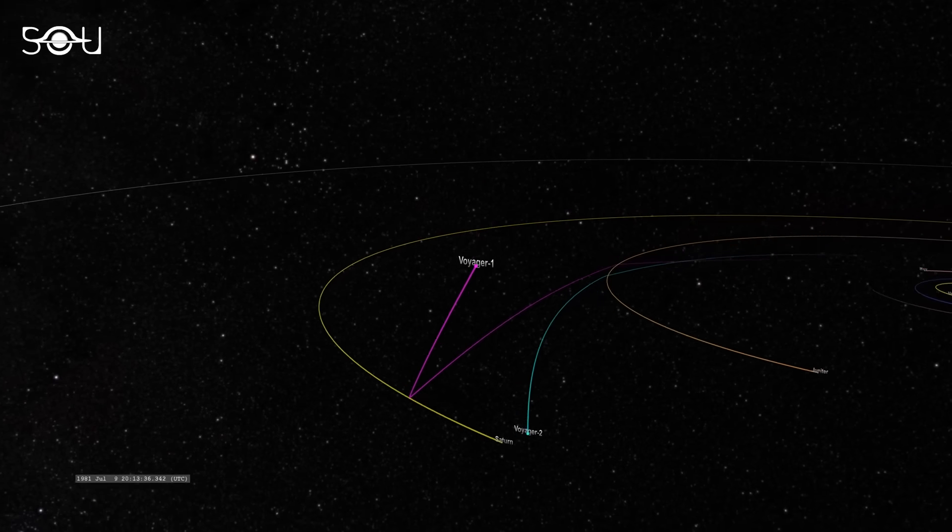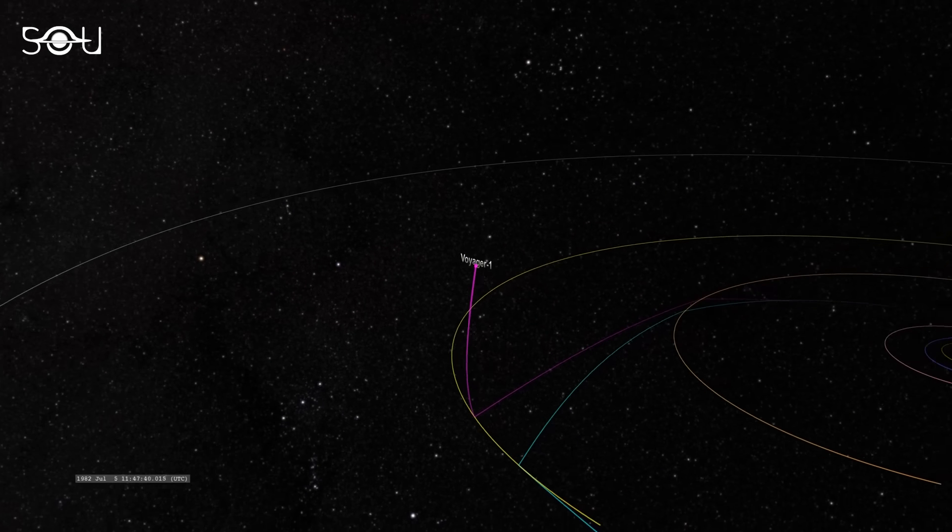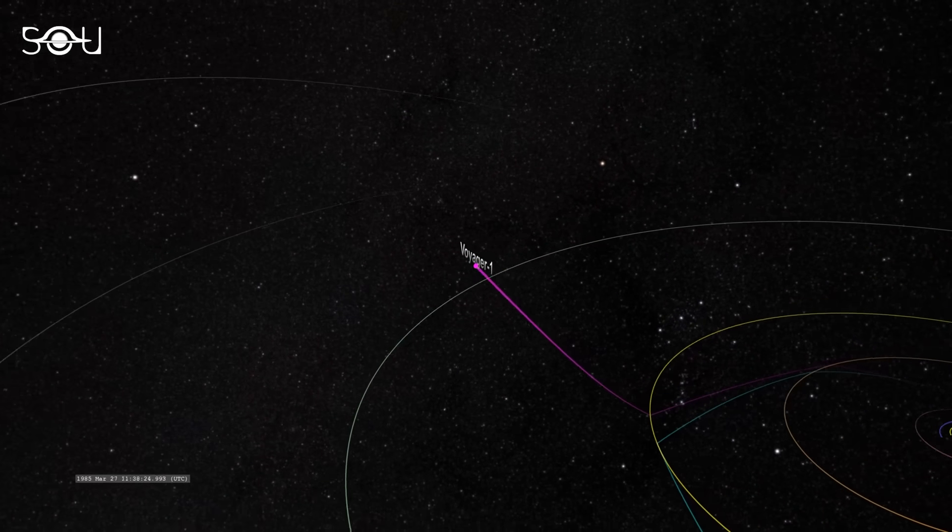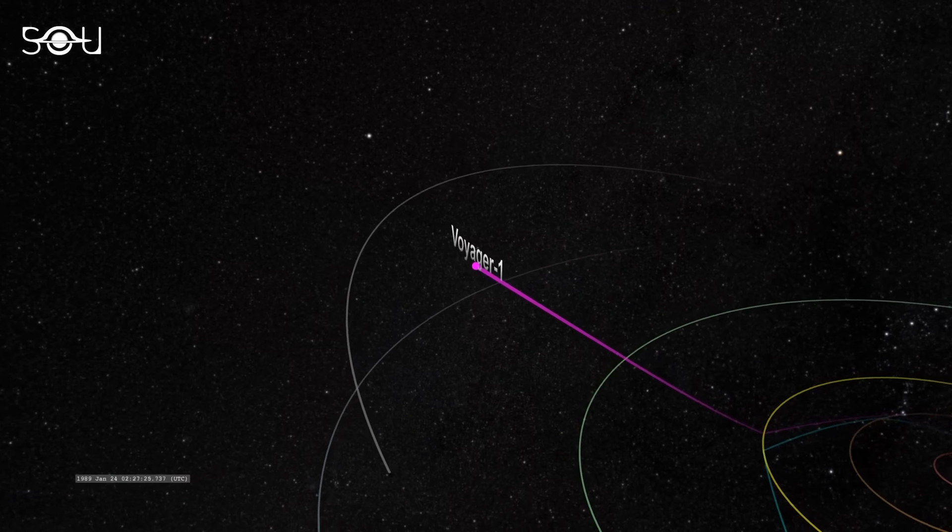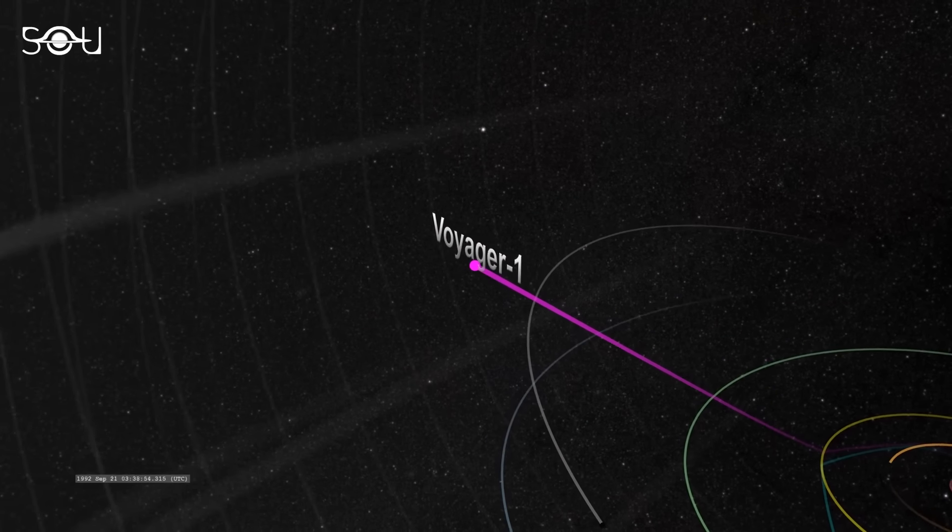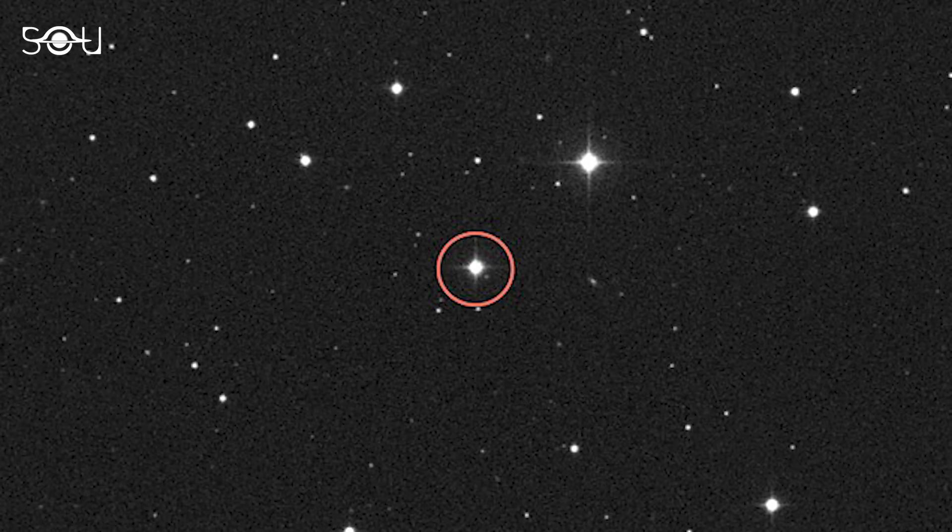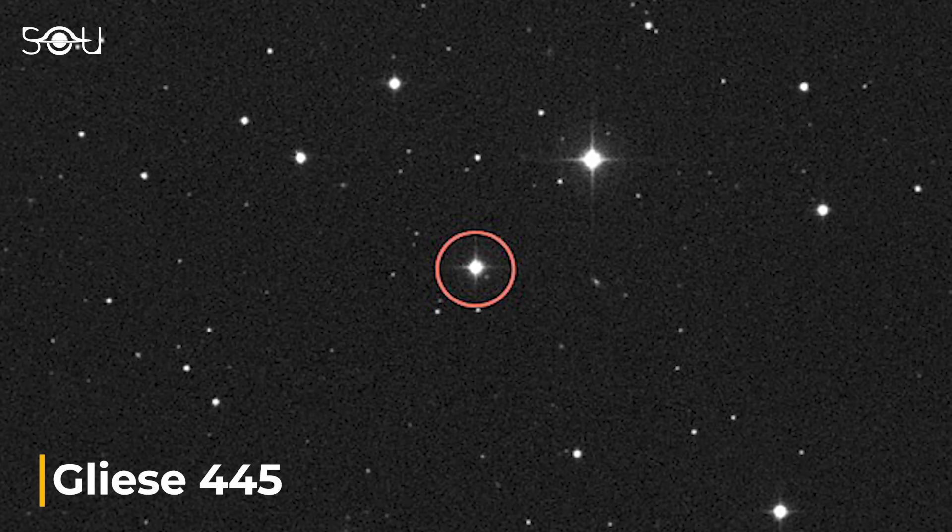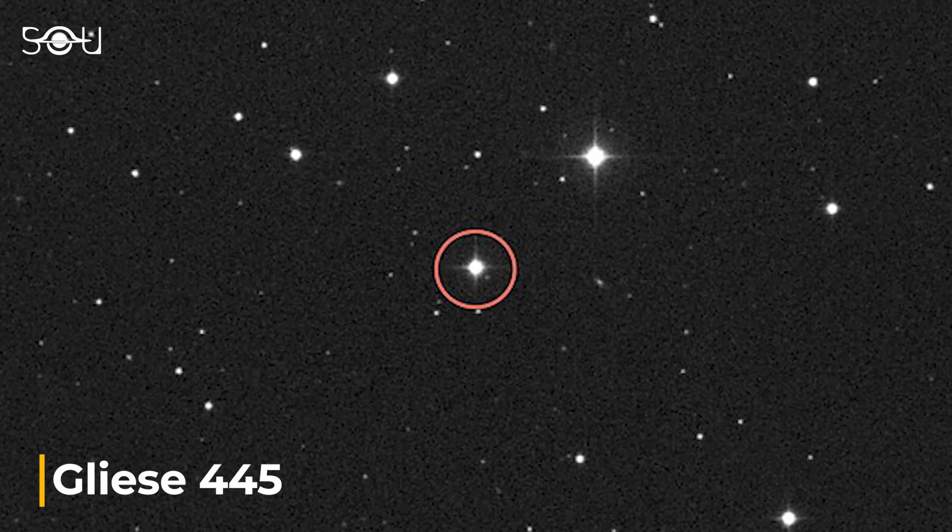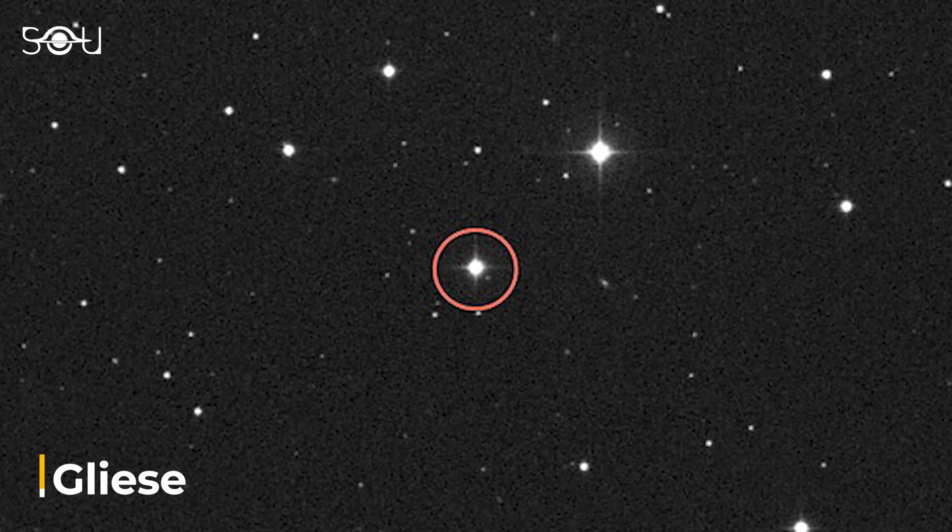Despite these challenges, Voyager 1's journey continues. It's not headed towards any particular star or planet, but in about 40,000 years, it will pass relatively close to a star named Gliese 445. In human terms, this is a long time, but it's a blink of an eye on the cosmic scale.